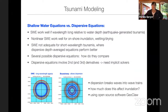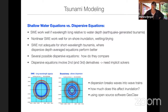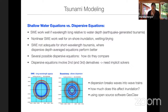The next question is what equations should we use to model the tsunami. Shallow water equations work well if the wavelength is long relative to the water depth, and that is the case for earthquake-generated tsunamis. For example, if ocean depth is about 4 kilometers, an earthquake fault can be 50 to 100 kilometers long or even longer — so it's depth to wavelength of the phenomenon. The nonlinear shallow water equations also work well in computing onshore inundation. However, the shallow water equations are not adequate for short wavelength tsunamis, and in this case dispersive equations perform better.